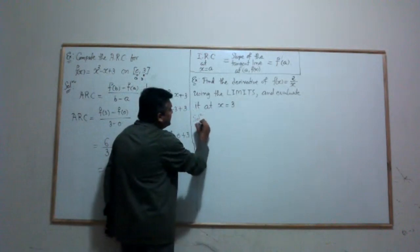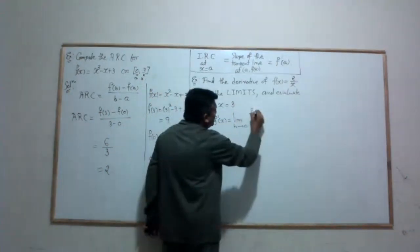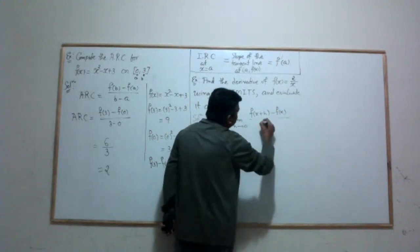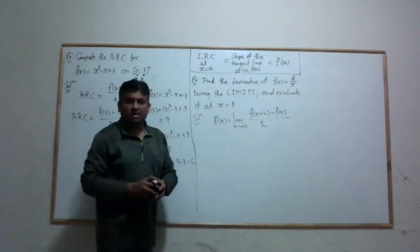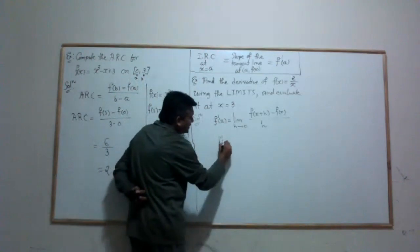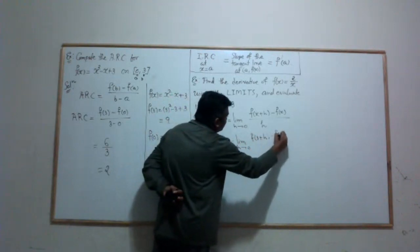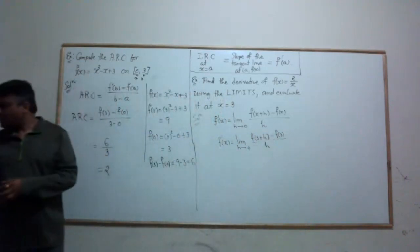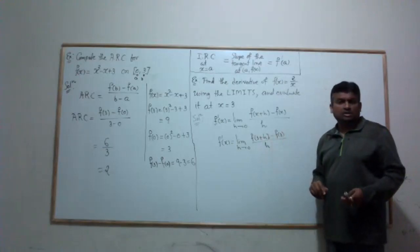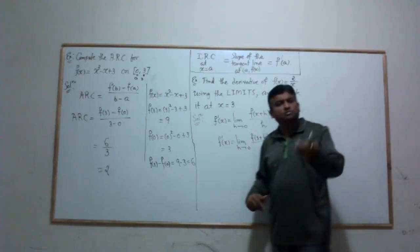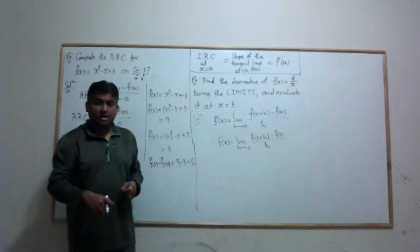The limit definition of derivative is: f'(x) = lim[h→0] [f(x+h) - f(x)] / h. Since I'm evaluating at x = 3, I plug in to get lim[h→0] [f(3+h) - f(3)] / h. I strongly recommend computing f(3), f(3+h), and their difference on the side first, then substituting the simplified result into the formula.